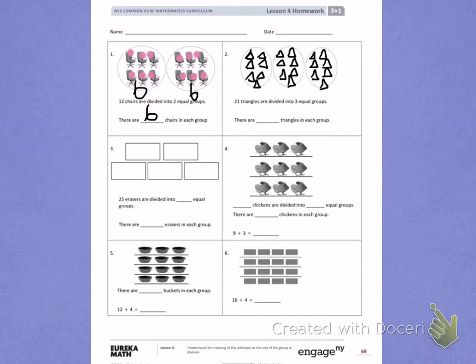Now to find out how many are in each group, I am going to count the rectangles in each group. 1, 2, 3, 4, 5, 6, 7. There are seven triangles in the first group.